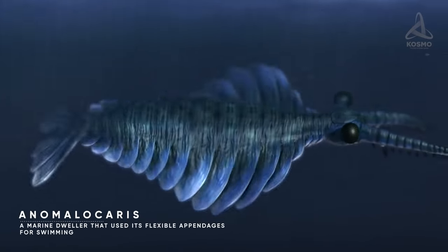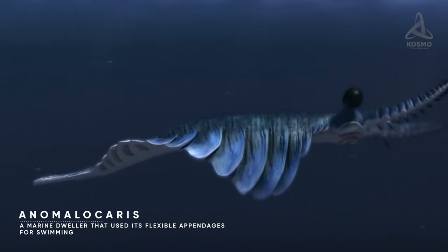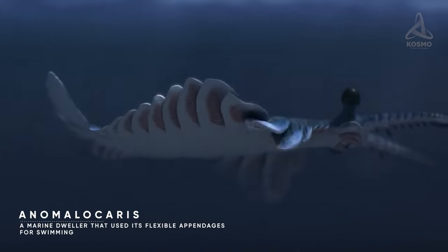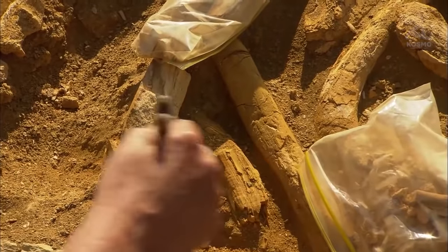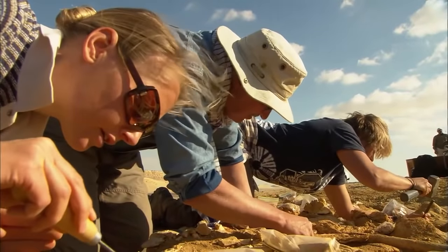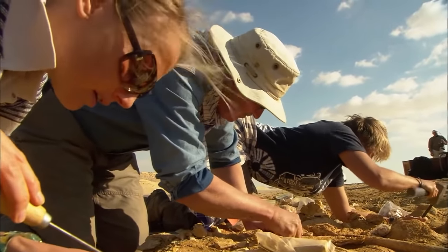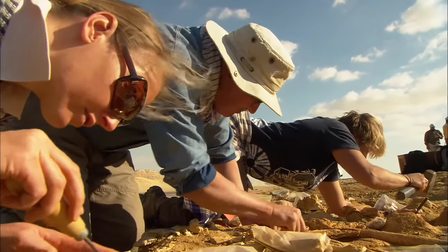Anomalocaris, for example, was a giant shrimp measuring up to 60 cm in length. It was also one of the apex predators in the Cambrian period. And even though other finds appear rather bleak in comparison, they are proof of some really important phenomena.